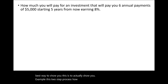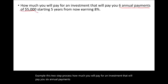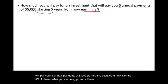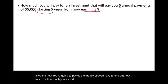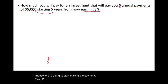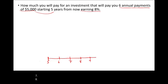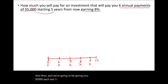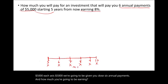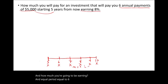How much will you pay for an investment that will pay you six annual payments of $5,000 starting five years from now, earning 8%? You have to find out how much you should pay today. The payments start at year 5 and continue through years 6, 7, 8, 9, and 10 — each payment is $5,000. We have n equal to 6 periods and i equal to 8%.